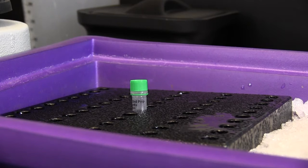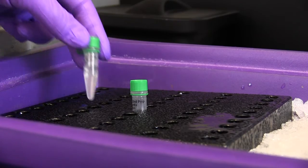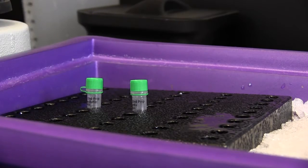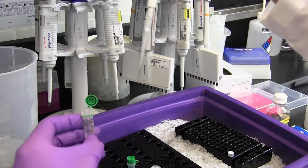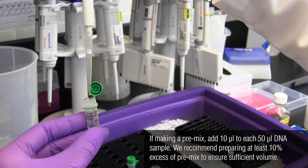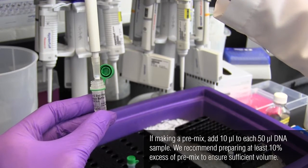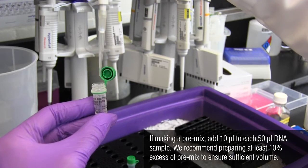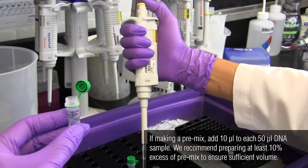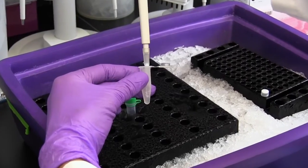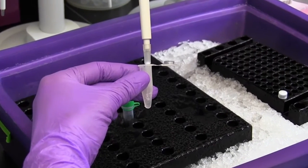You will be using the N-Prep enzyme mix and the N-Prep reaction buffer, which are in the green capped vials. For each library, add 3 microliters of the N-Prep enzyme mix and 7 microliters of the N-Prep reaction buffer to your 50 microliter fragmented DNA sample. Mix well by pipetting up and down 10 times.